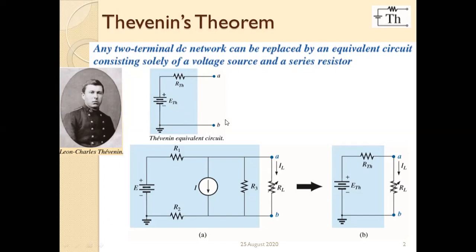The resulting network would look like this. Thevenin is saying that if you replace this circuit by this equivalent circuit, it will not affect the output characteristics of the network. If you again attach the external part of the network with this small network, the values of current, voltage, and resistance will remain the same between these two terminals. That is what is called the Thevenin equivalent network.